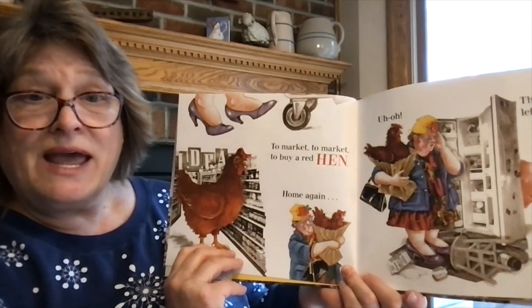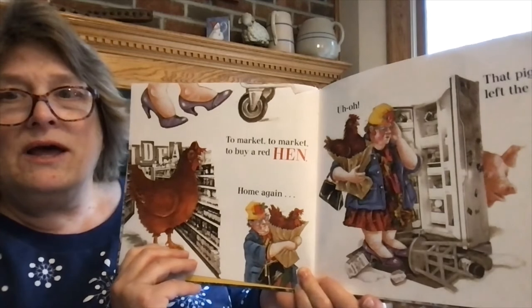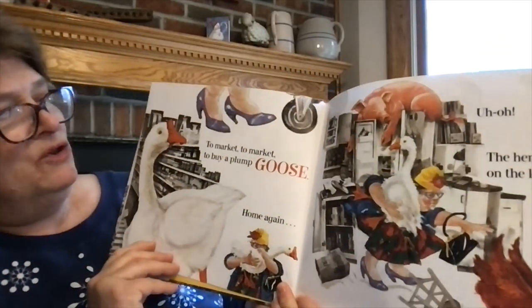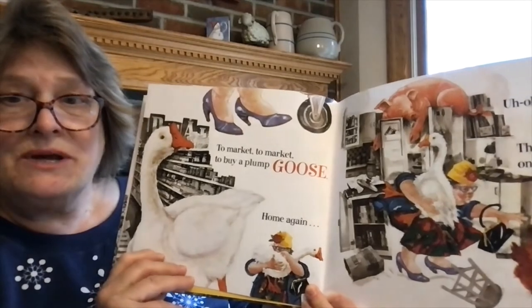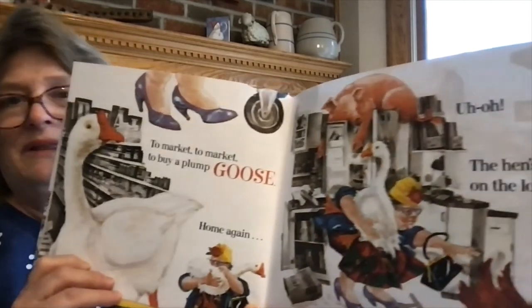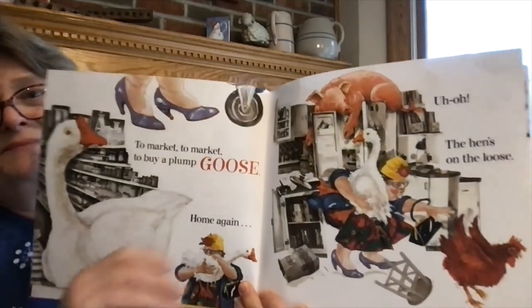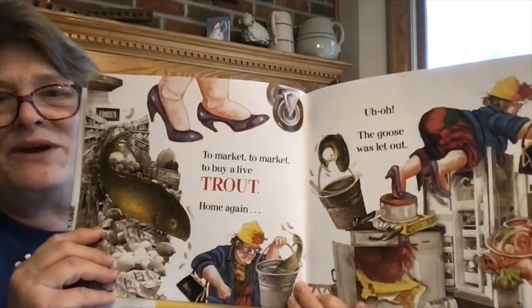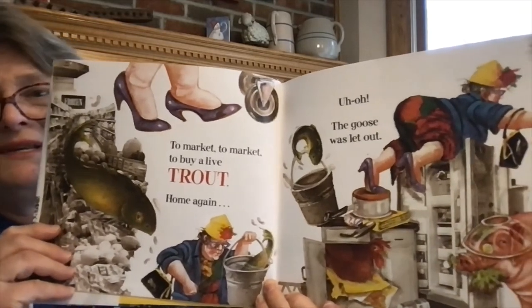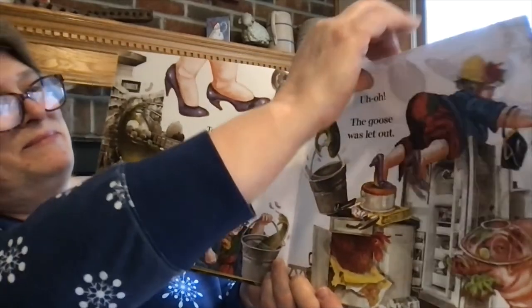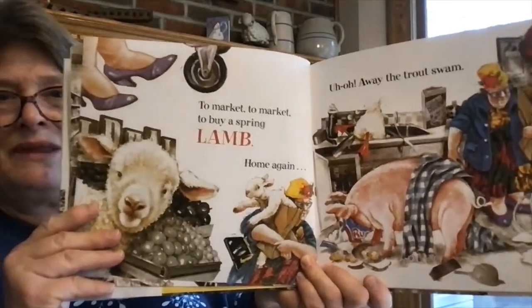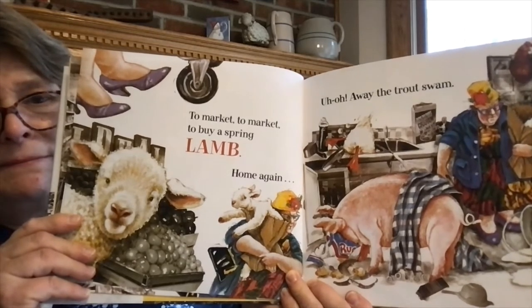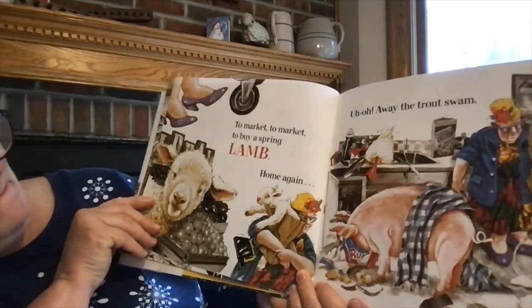To market, to market, to buy a red hen. Home again. Uh-oh, the pig left the pen. To market, to market, to buy a plump goose. Home again. Uh-oh, the hen's on the loose. To market, to market, to buy a live trout. Home again. Uh-oh, the goose was let out. To market, to market, to buy a spring lamb. Home again. Uh-oh, away the trout swam. Do you find the trout? Where is the trout? He got out. There he goes, down there.